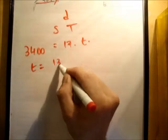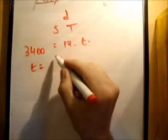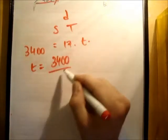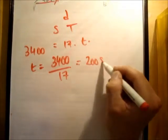The time, therefore, is equal to 3,400 over 17 is equal to 200 seconds.